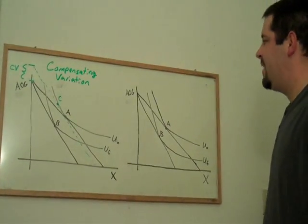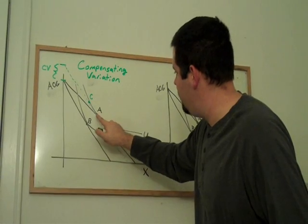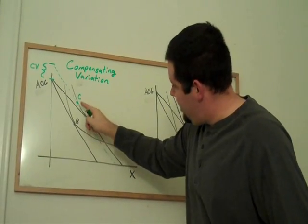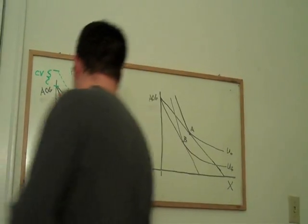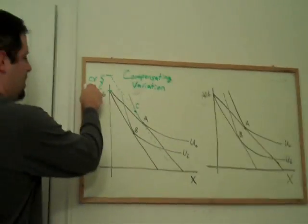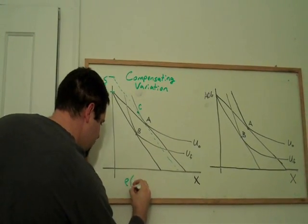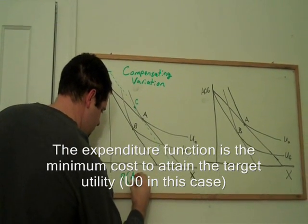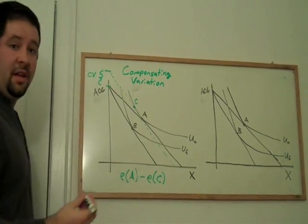Another way to think about it is that it is the difference in the expenditures between A and C. But C costs more than either A or B. So one way to think about this is that this compensating variation is the difference in the expenditure function at A and the expenditure function at C.